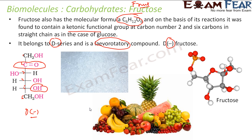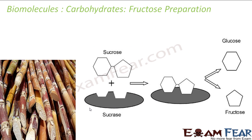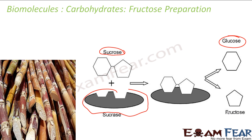The name fructose came from fruits — also called fruit sugar. Let's see the preparation of fructose. We have sucrose, and we use an enzyme called sucrase. This enzyme helps in breaking sucrose into glucose and fructose. Sucrose on hydrolysis, in the presence of a catalyst and some acid, gives fructose and glucose. Sucrose is from sugarcane.